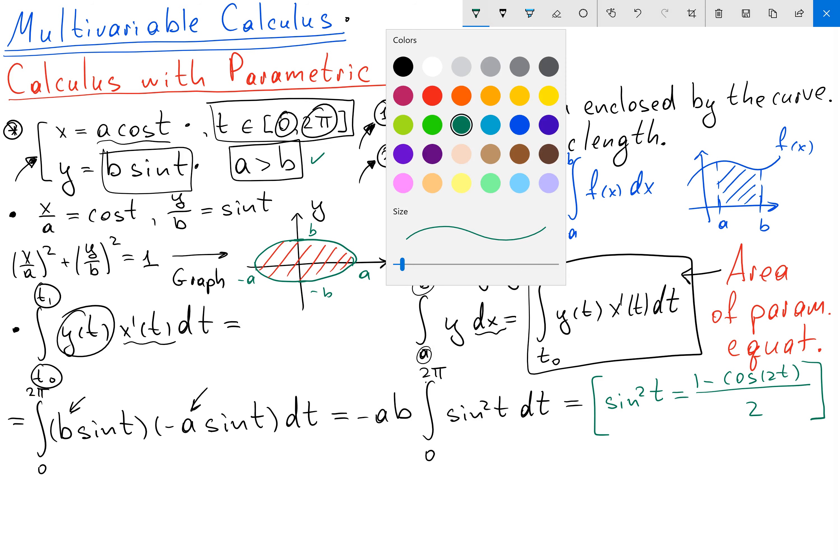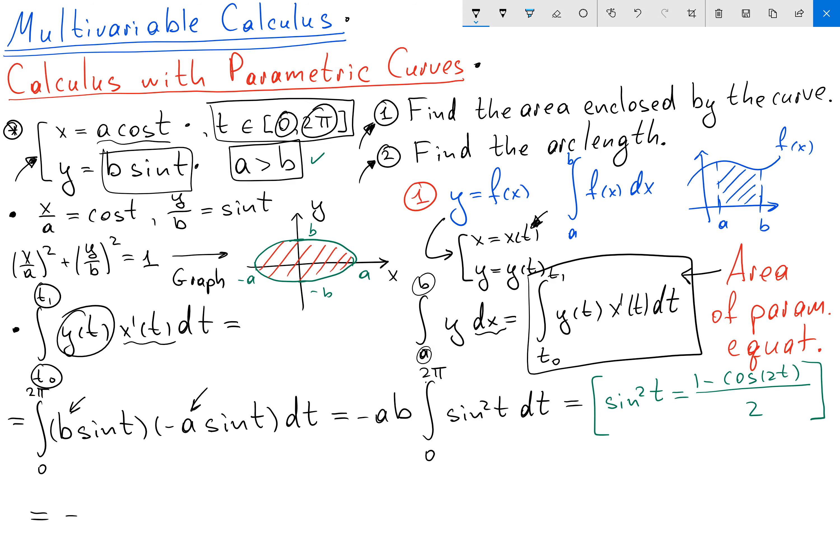So my integral is going to be equal to minus ab from 0 to 2π. And then I'm going to have inside 1 minus cos 2t over 2 dt. And here I'm going to use one trick. Integral of cos in this case is going to be sin 2t. So when I'm going to plug in t equals to 0 and t equals 2π, I will have sin of 0 and sin of 4π. And both of them are 0.